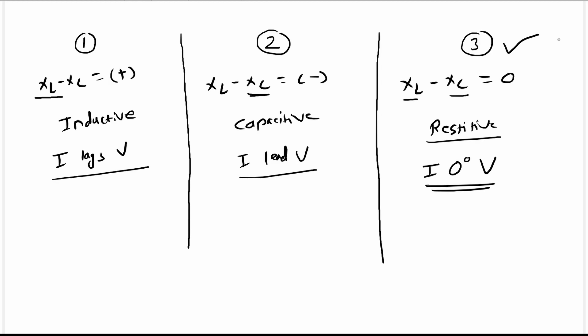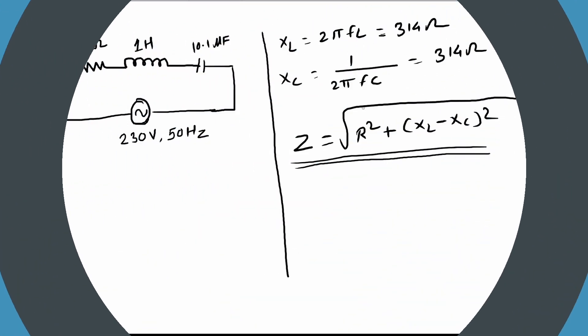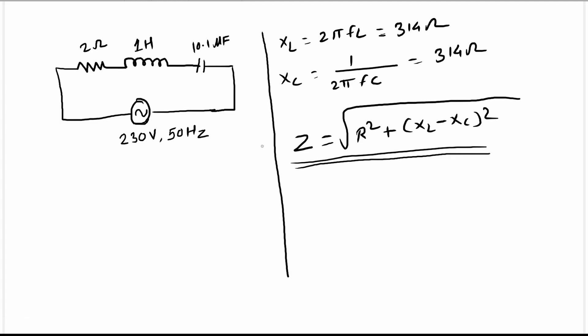These three conditions are really important in order to understand the RLC circuit. Now let us get back to our calculation. Putting the values into Z = √(R² + (XL − XC)²), the impedance comes out to approximately 2 ohms.